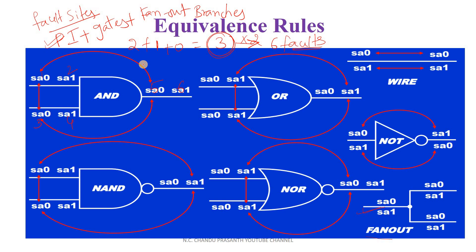The AND gate can detect totally 6 faults. Stuck-at-0 at input is equivalent to stuck-at-0 at output in an AND gate. Similarly, just the opposite to AND gate — for a NAND gate, stuck-at-0 at input is equivalent to stuck-at-1 at output.